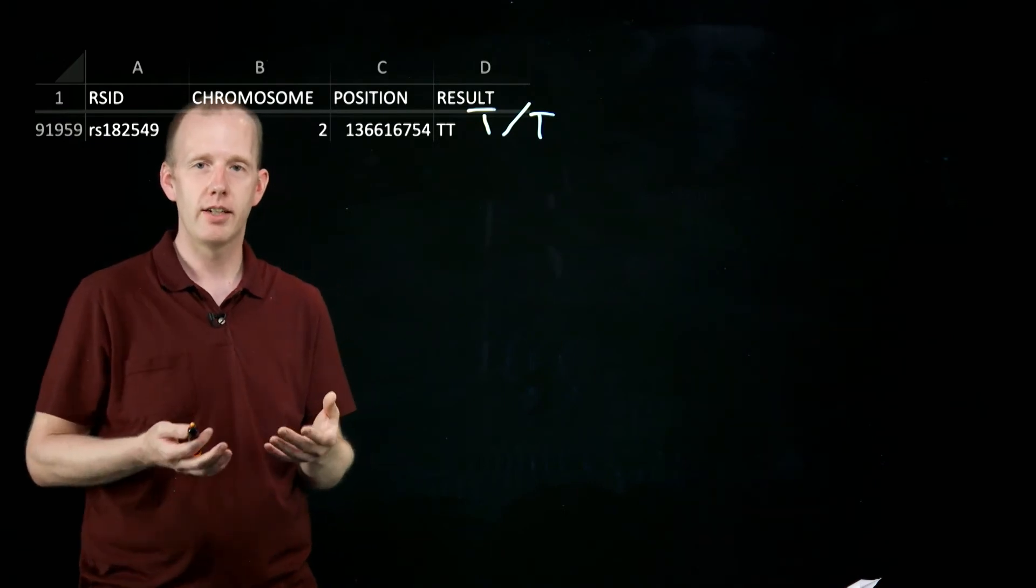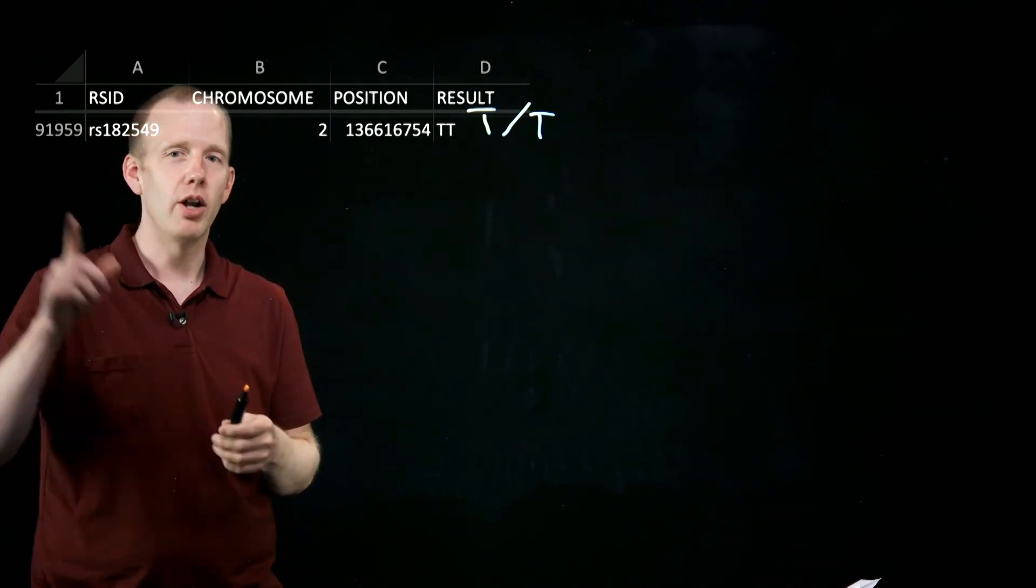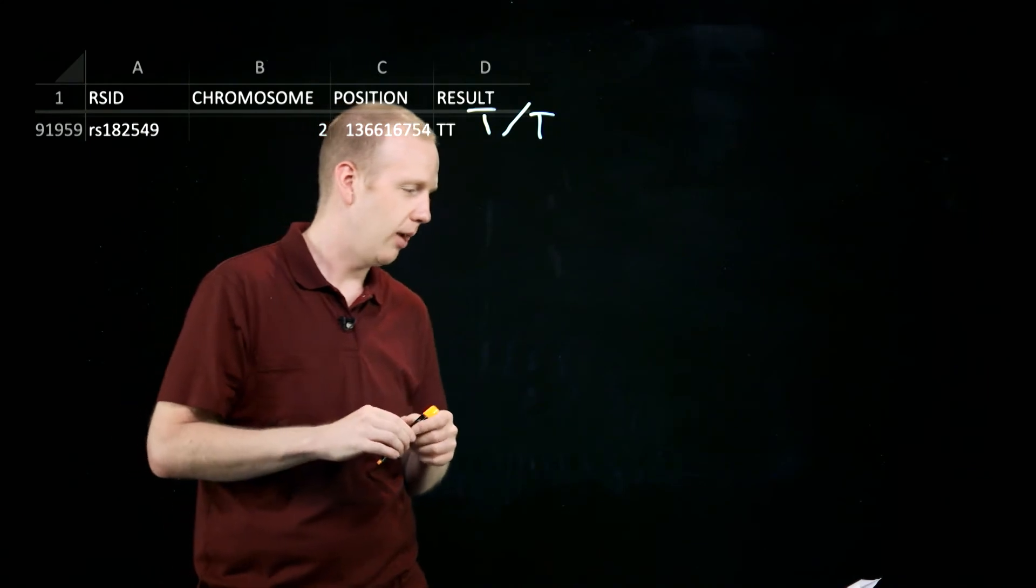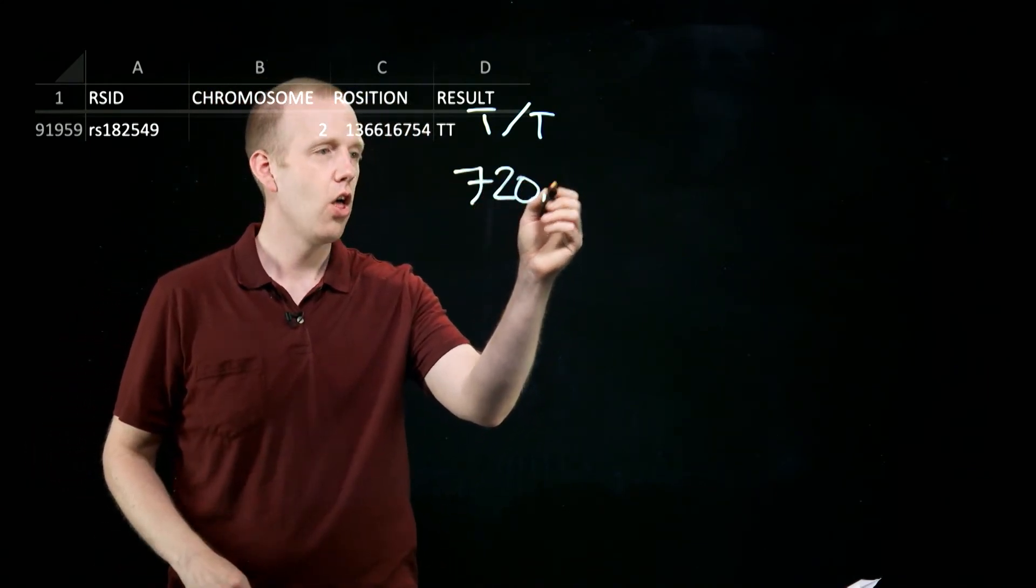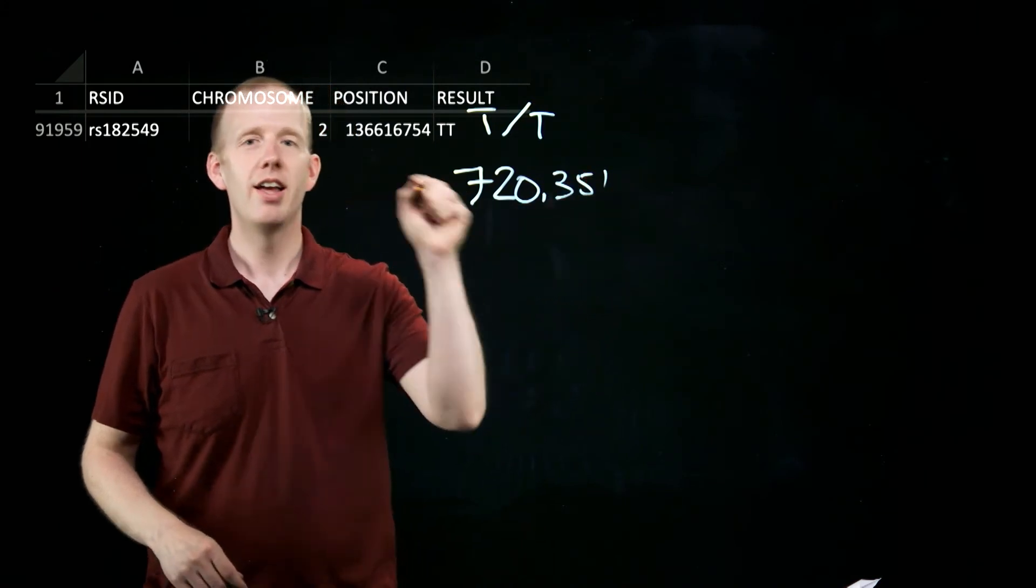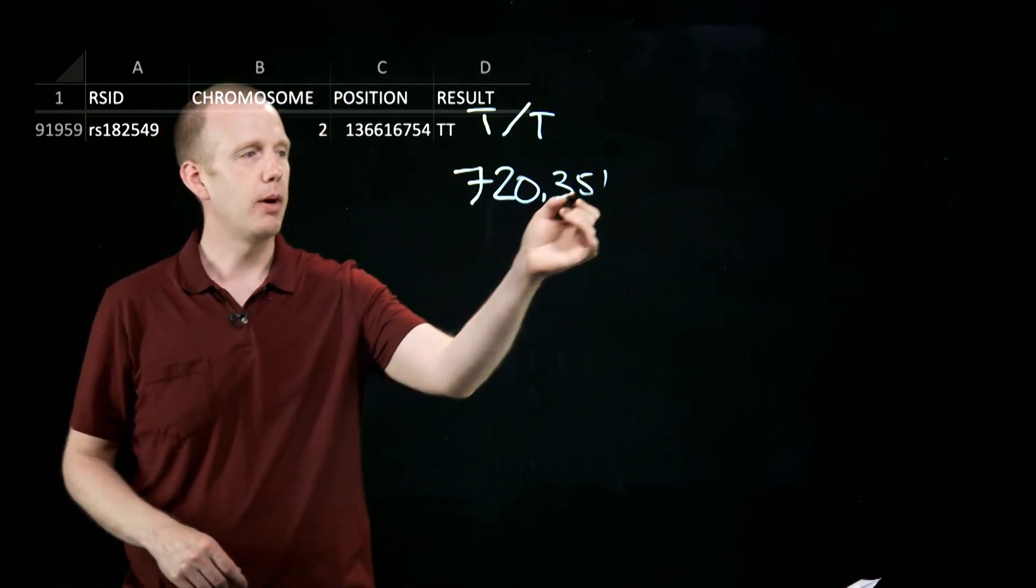That's what the genetic testing company did for me. But not just at this one nucleotide. They did it so many times, they actually looked at 720,351 different SNPs in my genome.